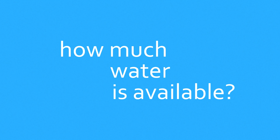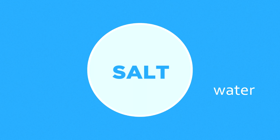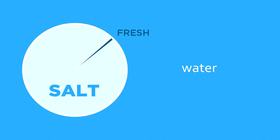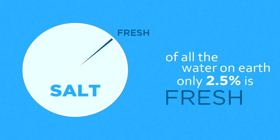How much water is available in the global water cycle? Of all the water on the earth, only 2.5% of it is fresh.